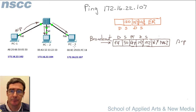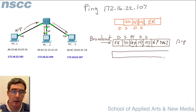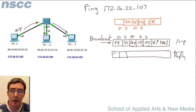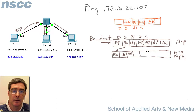The same frame comes to PC3. PC3 goes through the same process, but when it gets to the question about layer 3 addressing, it says yes — I'm 107. So it sends back an ARP reply. It knows where the ARP came from, so it sends the reply back to the source MAC address, ending in 50. The ARP reply shows destination 102 and source 107, along with PC3's own MAC address ending in 18.